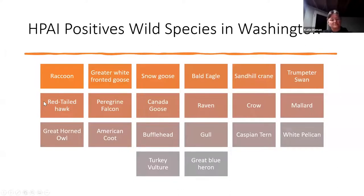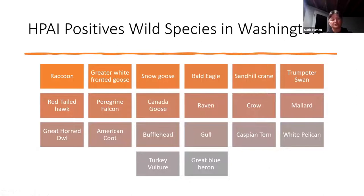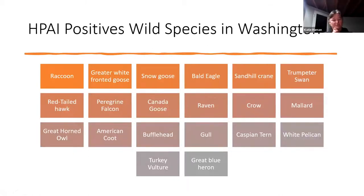This is the list of positives we have in Washington — the American coot and bufflehead are pending presumptive positives. We have a pretty wide range of species affected here in Washington: a lot of raptors, a lot of owls, we're starting to see some more seabirds and gulls. I've gotten multiple reports of sick and dead seagulls of various species — a pretty large number of species have been impacted.